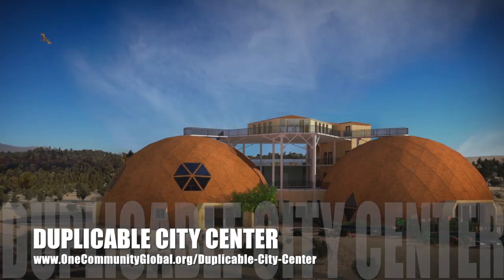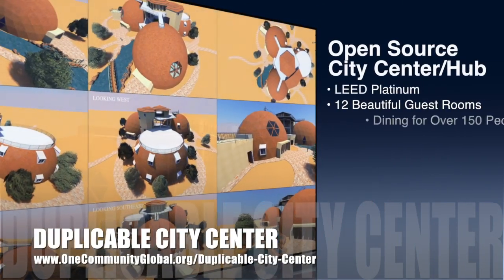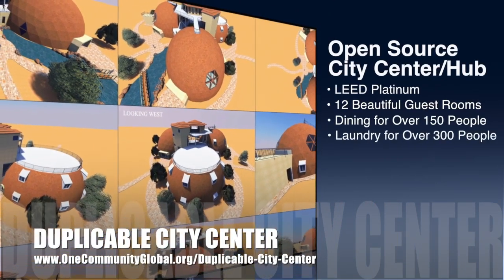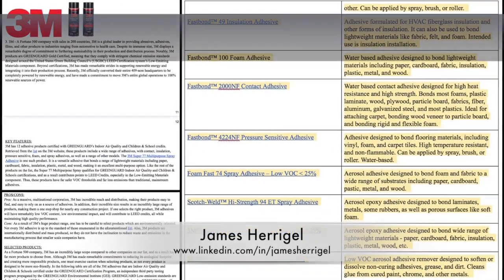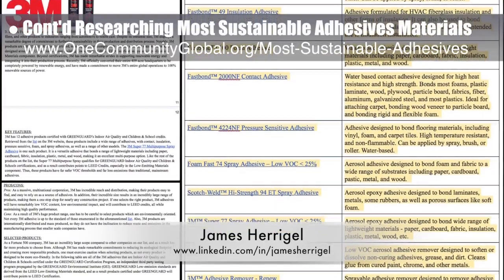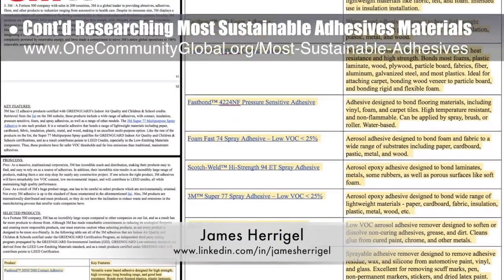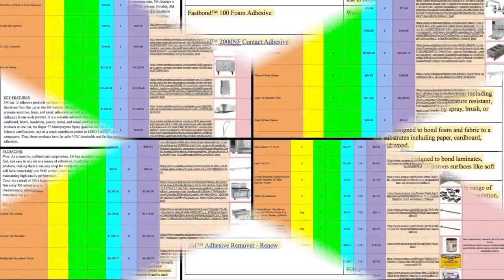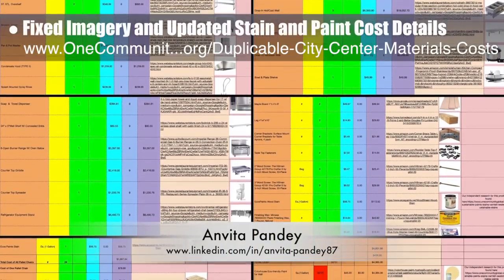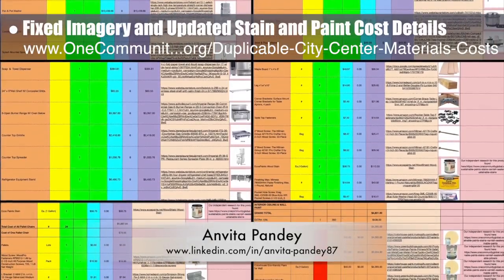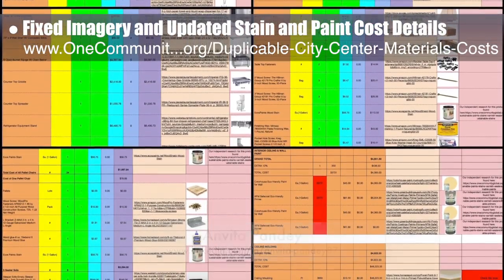One Community is also creating an open source duplicable city center designed to be LEED Platinum certified, providing 12 guest rooms, dining for over 150 people, and laundry and recreation space for over 300 people — all while saving money, time, space, and resources. James Harigal, student researcher, completed his 19th week researching sustainable materials for the most sustainable adhesives page, focusing on researching and adding specific products to the 3M product section. Veda Kumari Pandey, civil engineer, fixed all the imagery on the kitchen spreadsheet and updated all paint and stain details to match separate research on the most sustainable options.